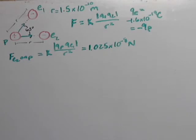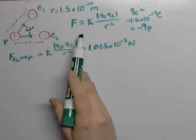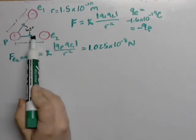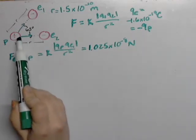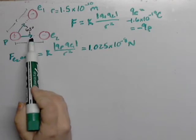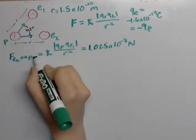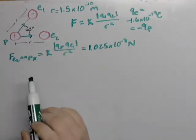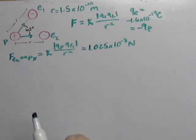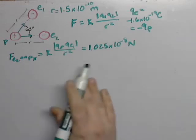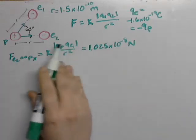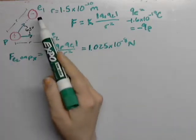Now since we're pretending that this is on the x axis, all of the force of E2 on P is going in the x direction. So we can call this the x component of the force E2 on P. That means we're done. There's no y component here that we have to deal with. Now let's go to E1.